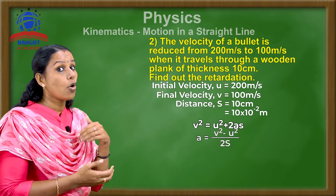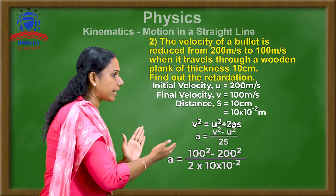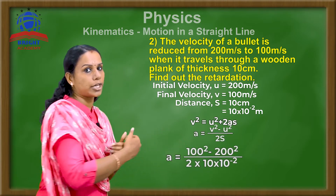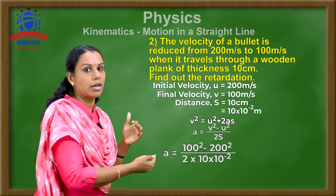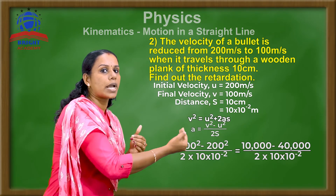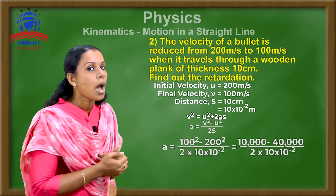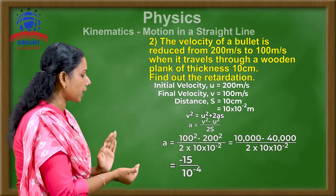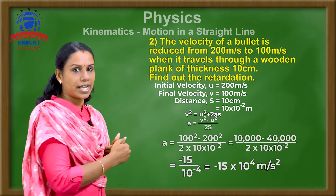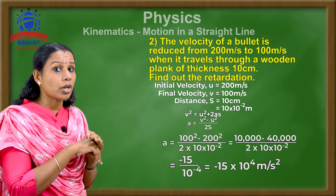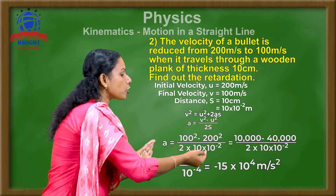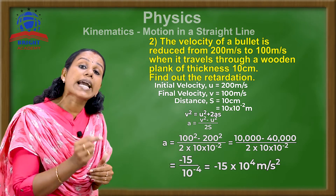Substituting: v = 100 m/s, so v² = 100² = 10,000. u = 200 m/s, so u² = 200² = 40,000. S = 10 × 10⁻² m. Therefore A = (10,000 − 40,000) / (2 × 10 × 10⁻²) = −30,000 / (2 × 10⁻¹). Simplifying, A = −15 × 10⁴ meter per second square. The negative sign indicates retardation.